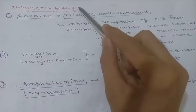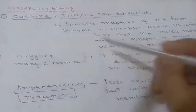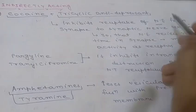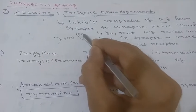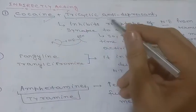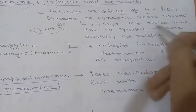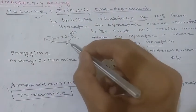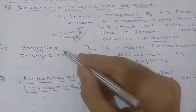Indirectly acting drugs: cocaine and tricyclic antidepressants inhibit the reuptake of norepinephrine from the synapse back into the presynaptic terminal. This means norepinephrine remains in the synapse for a longer time and can act on receptors for an extended period.